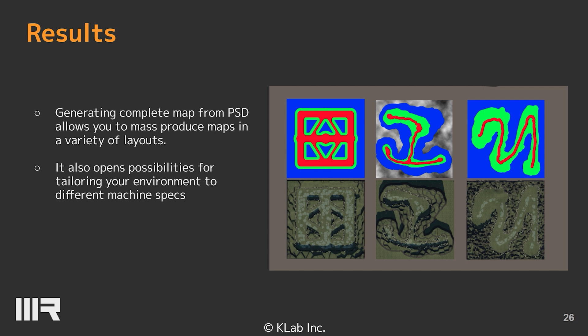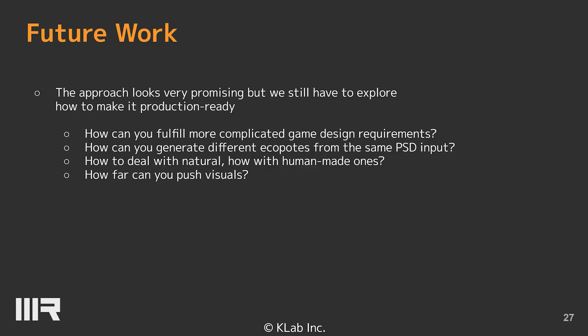This process makes it possible to mass-produce various map layouts like the ones shown on the right using only PSD. This approach looks very promising, but we need to find a way to make it production-ready. What updates can be made to meet the requirements of more complex game design? How do we generate different outputs from the same PSD input? How do we differentiate between natural and artificial objects? How far can you push your visuals? We've introduced the first part of the project and hope to have another opportunity to expand further in the future.